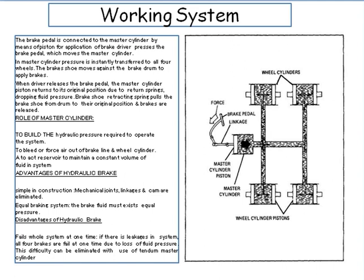The brake shoe retracting spring pulls the brake shoes away from the drum to their original position and brakes are released. The main roles of the master cylinder are: to build the hydraulic pressure required to operate the system; to bleed or force air out of the brake line and wheel cylinder; and to act as a reservoir to maintain a constant volume of fluid in the system. The main advantages of the hydraulic braking system: it is simple in construction; mechanical joints, linkages and cams are eliminated; and equal braking is achieved as the brake fluid exerts equal pressure. The main disadvantage is that if there is a leakage in the system, all four brakes fail at one time due to loss of fluid pressure. This difficulty can be eliminated with the use of a tandem master cylinder.